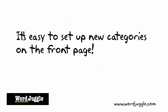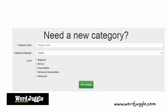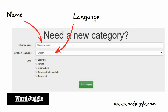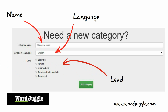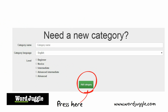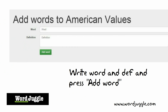You can set up as many categories as you like. You simply type the name of the category on the front page. Then you choose the language that you will use for the category, and you choose the expected level of difficulty. Finally you start adding each word and definition. Immediately you can start printing flashcards.